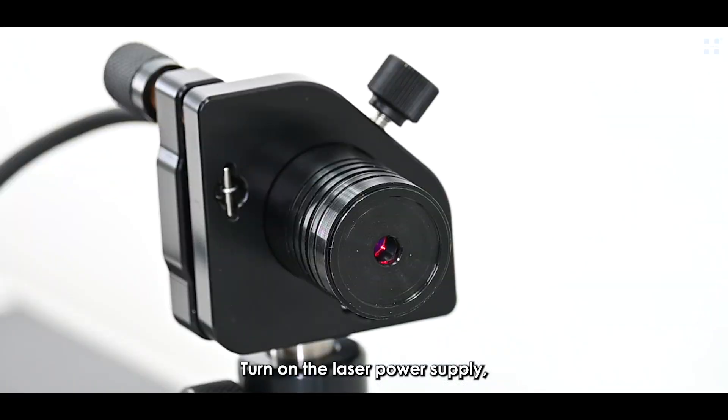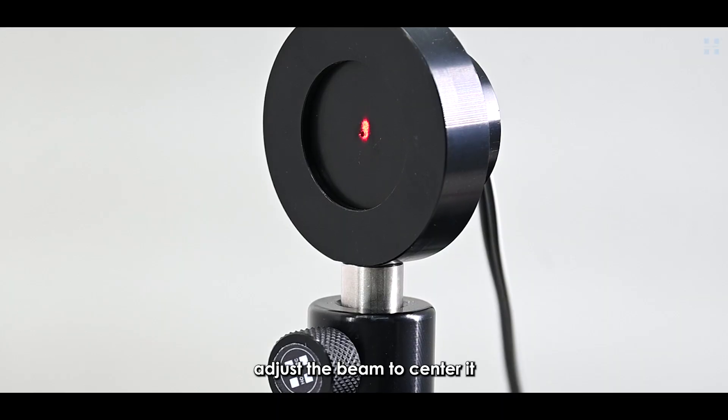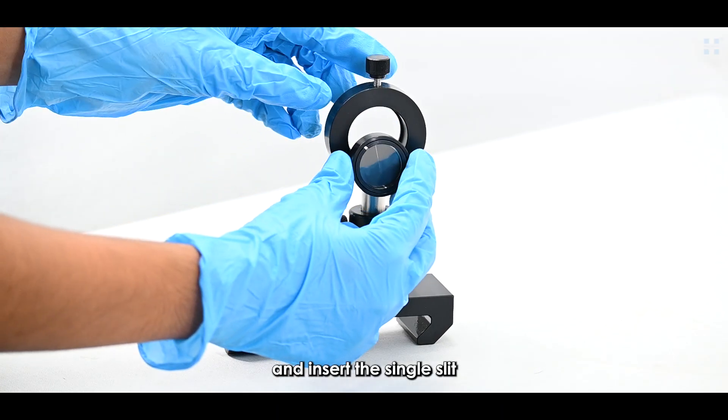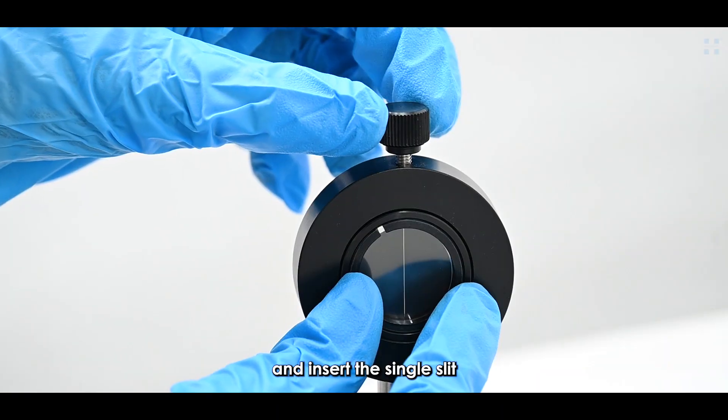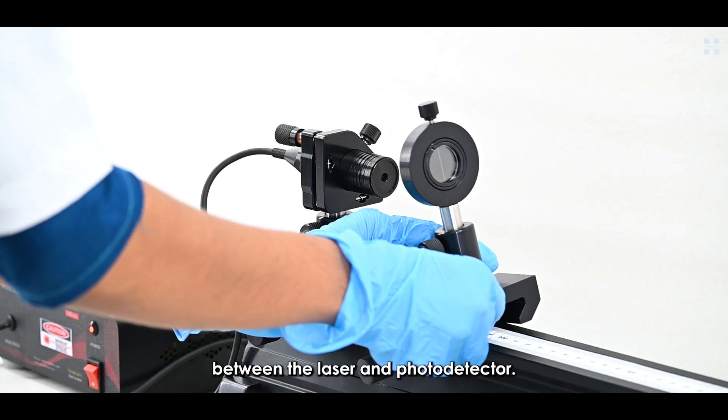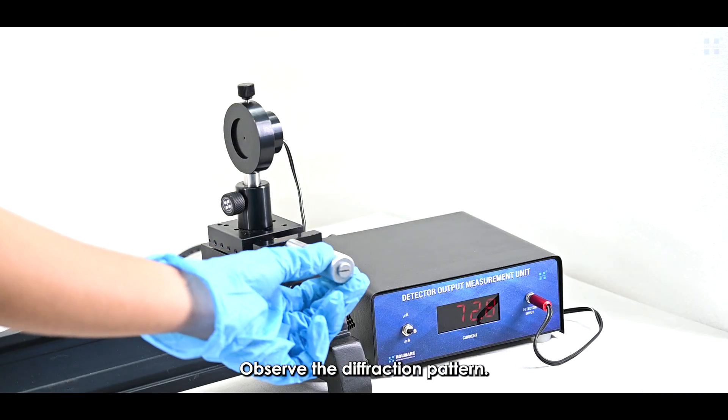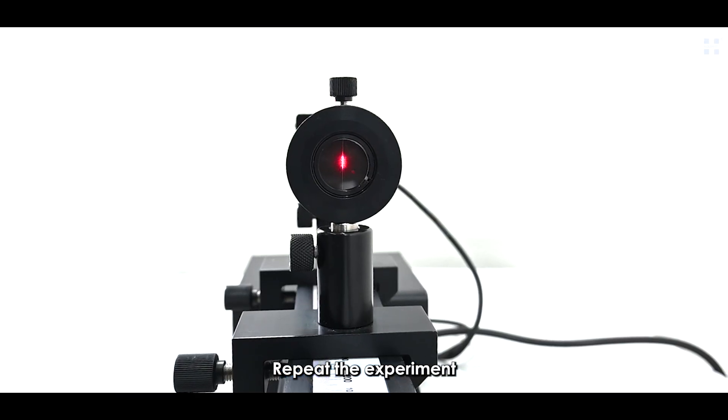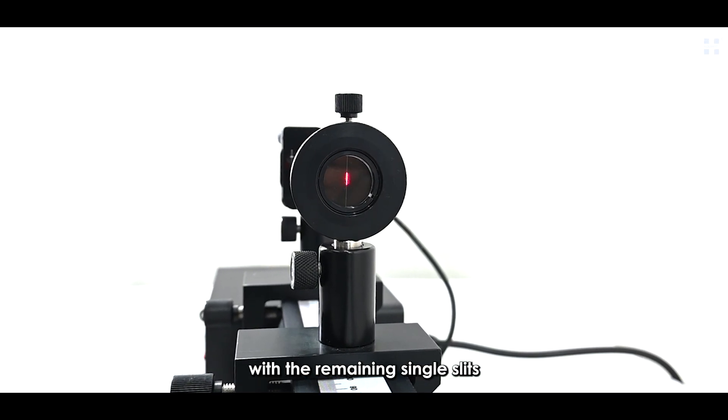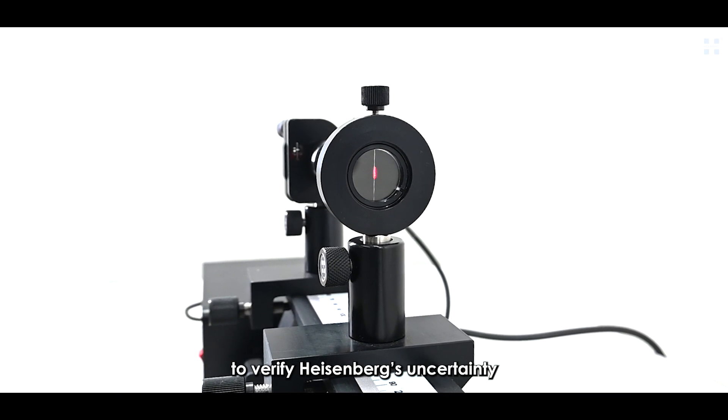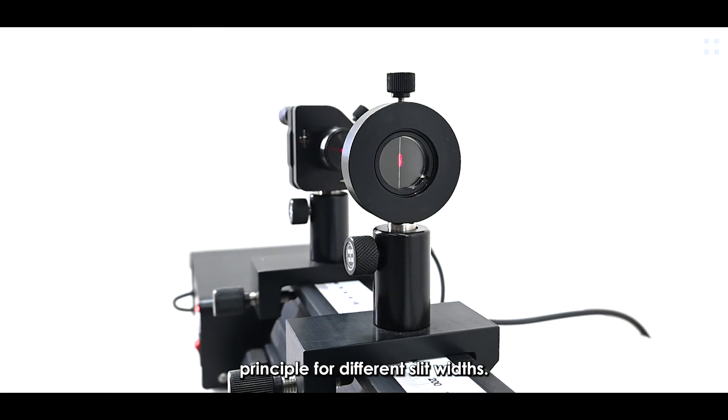Turn on the laser power supply, adjust the beam to center it on the photodetector, and insert the single slit cell into the cell mount. Then fix the cell mount between the laser and detector on the rail. Observe the diffraction pattern. Repeat the experiment with the remaining single slits and compare results to verify Heisenberg's uncertainty principle for different slit widths.